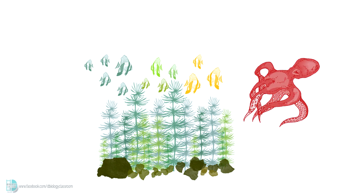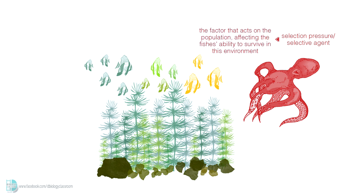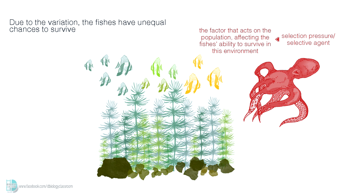When a predator arrives at the habitat, it becomes the selection pressure or the selective agent. This is the factor that acts on the population affecting the fish's ability to survive in this environment. Due to the variation, the fishes have unequal chances to survive. Natural selection occurs and determines which one of them has a higher chance to live on.